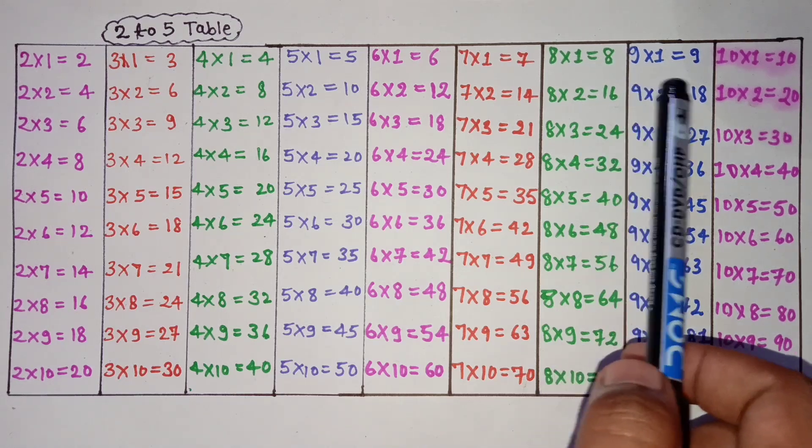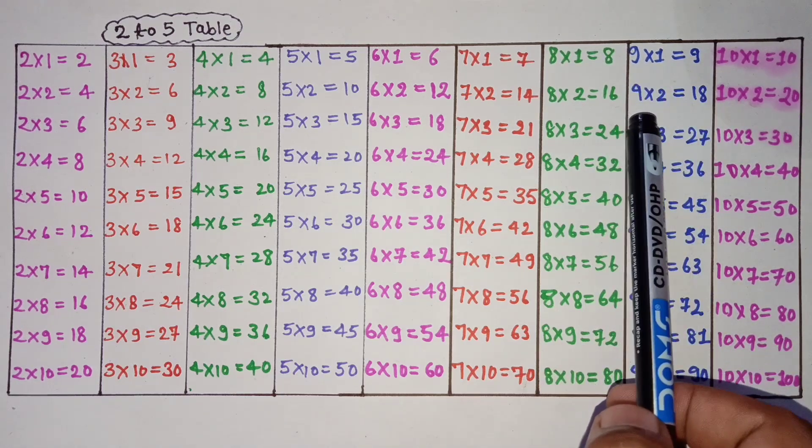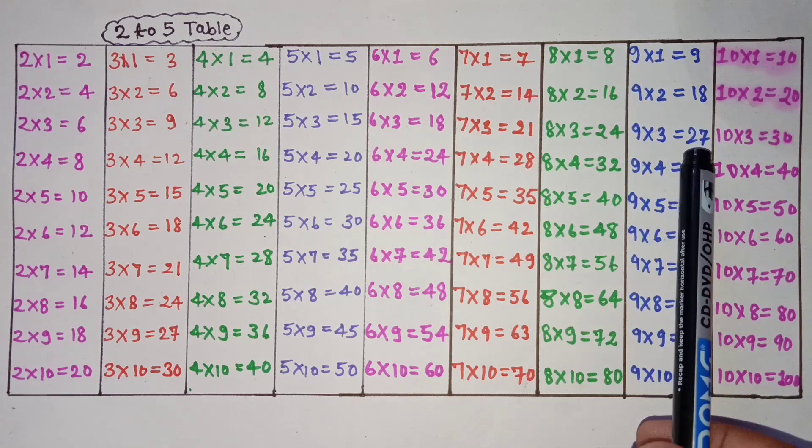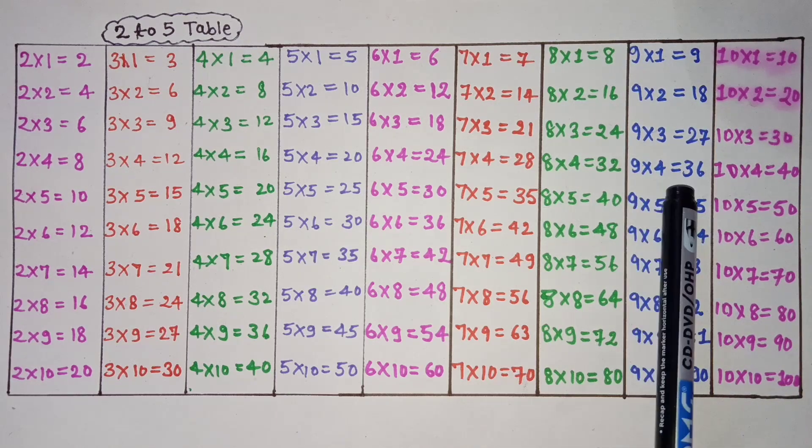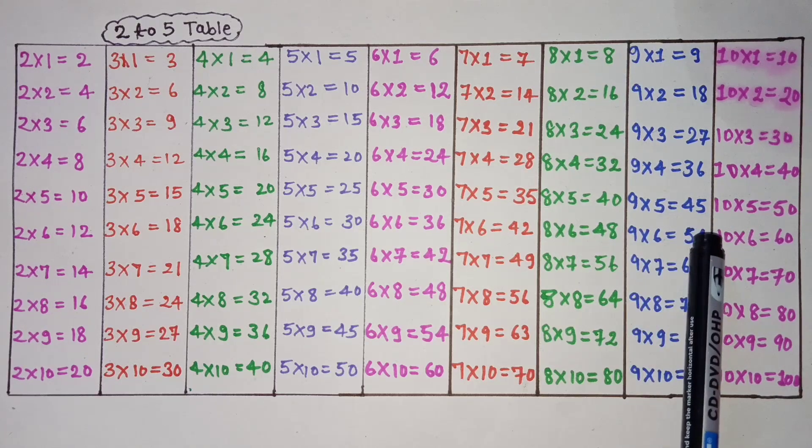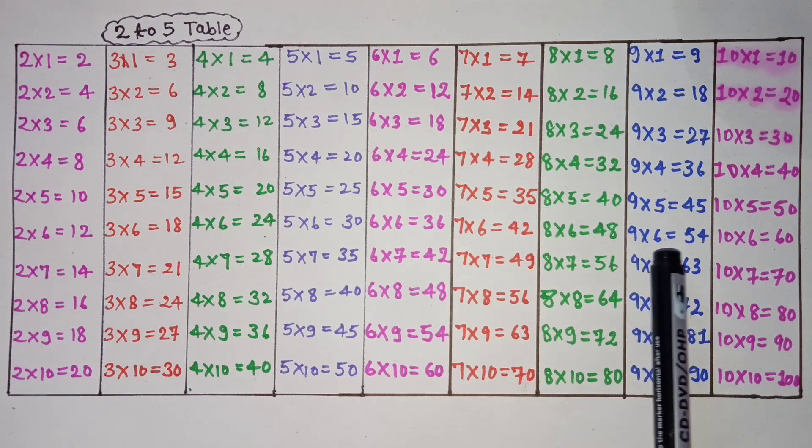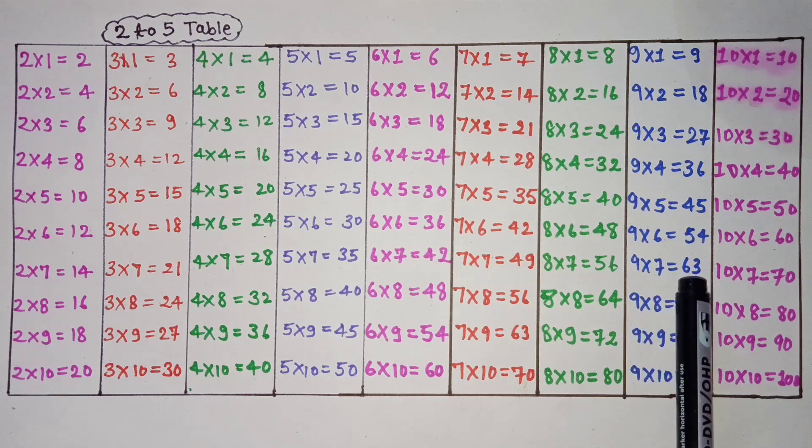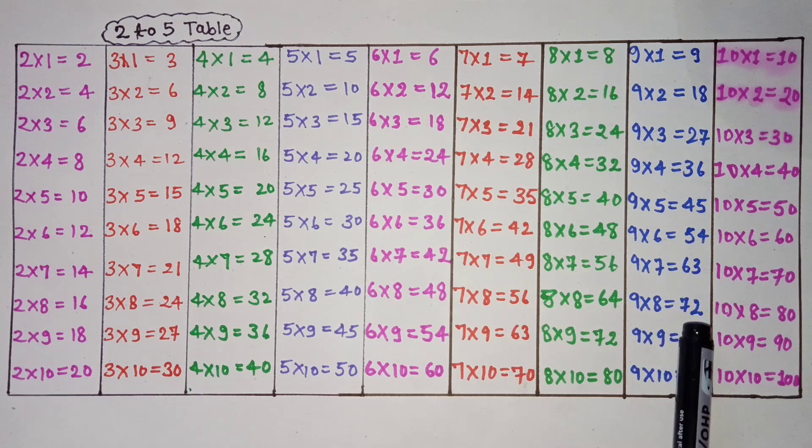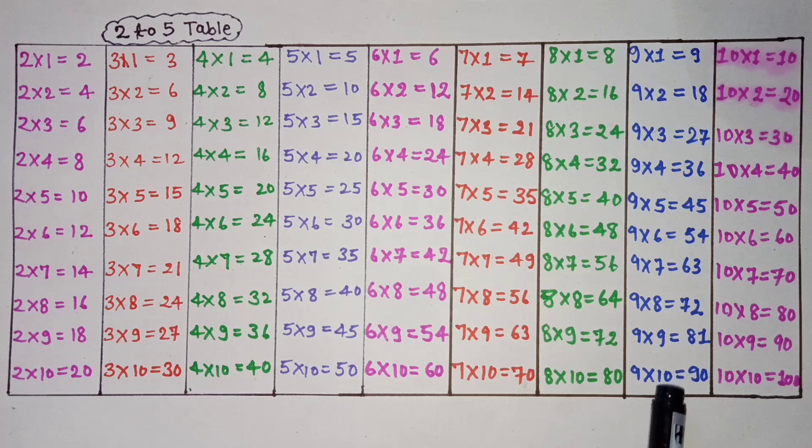9 times 1 is 9, 9 times 2 is 18, 9 times 3 is 27, 9 times 4 is 36, 9 times 5 is 45, 9 times 6 is 54, 9 times 7 is 63, 9 times 8 is 72, 9 times 9 is 81, 9 times 10 is 90.